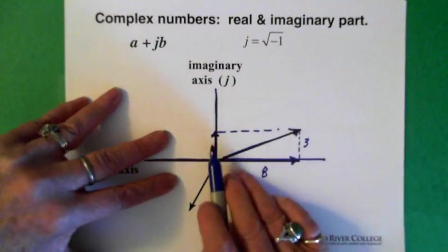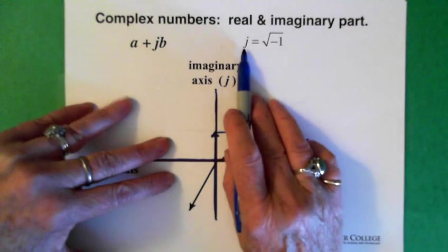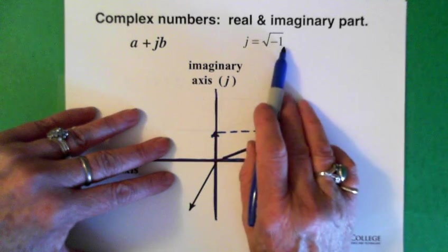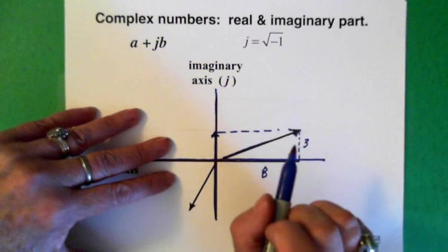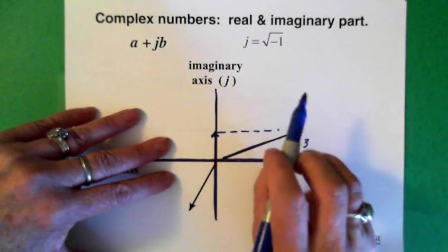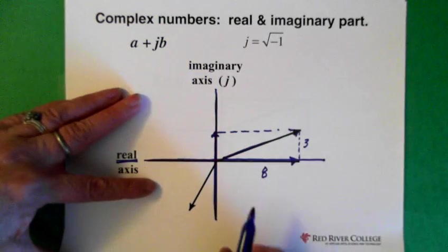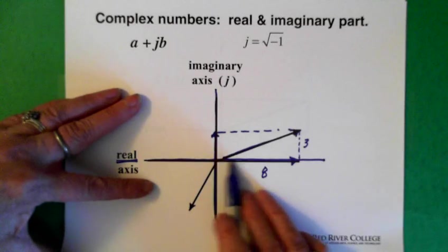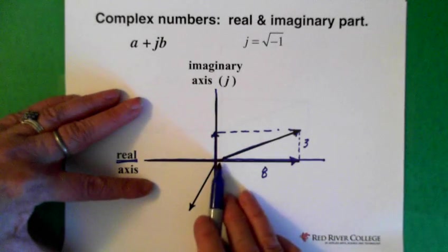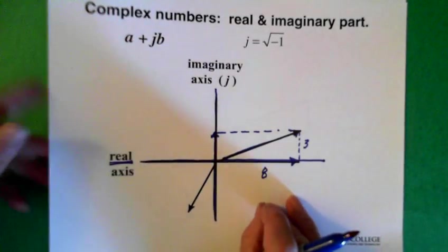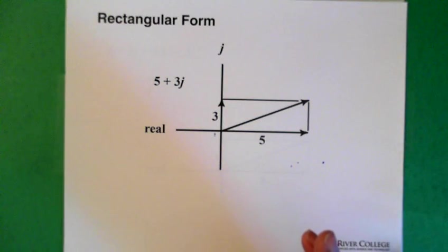The other thing about this axis is we're thinking about j, which is the square root of negative 1. I'm not really going to be talking about that very much. I'm more interested in your understanding what we do with what's on the real axis and on the imaginary axis.